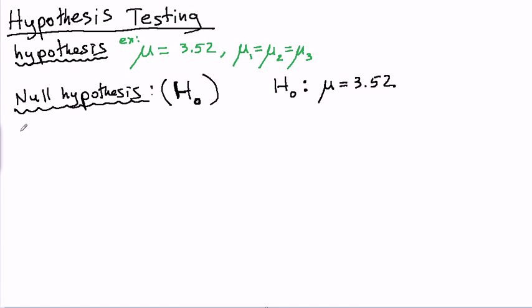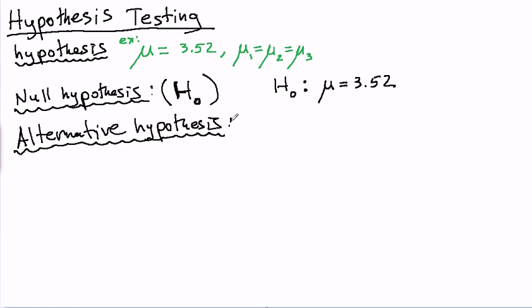Now, the other important piece of a hypothesis test is the alternative hypothesis. And this pair of null and alternative is what sets up a hypothesis test. So the notation we're going to use is H subscript 1. So what's an alternative hypothesis? It's simply the competing claim to the null hypothesis.